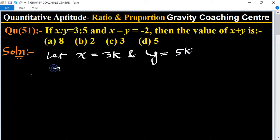Given x minus y equal to minus 2, now we are putting the value of x and y. So 3k minus 5k equal to minus 2.